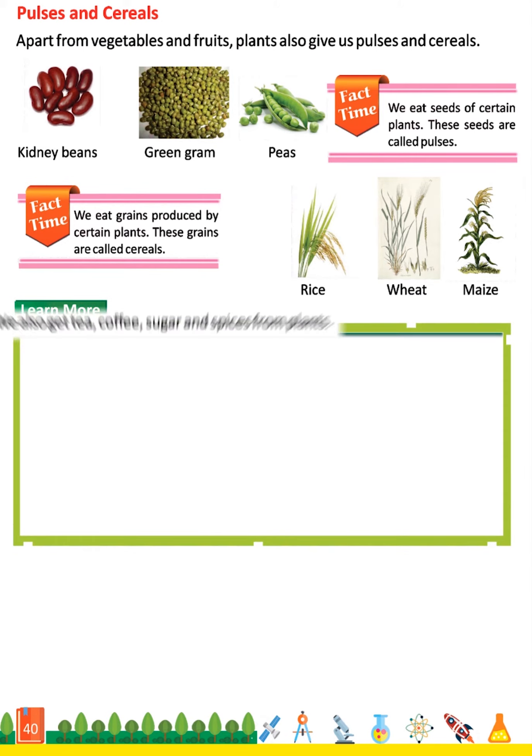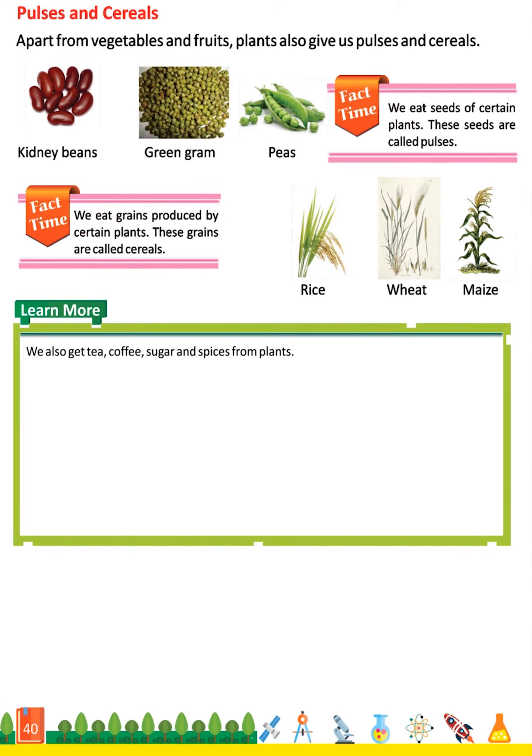Learn more: We also get tea, coffee, sugar and spices from plants. Tea, Coffee, Sugar Cane, Spices.